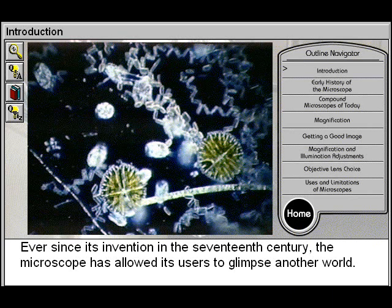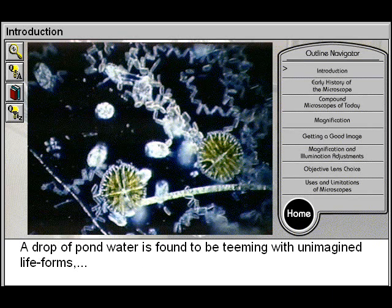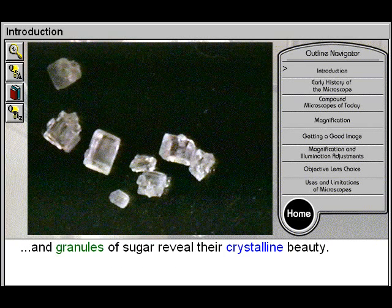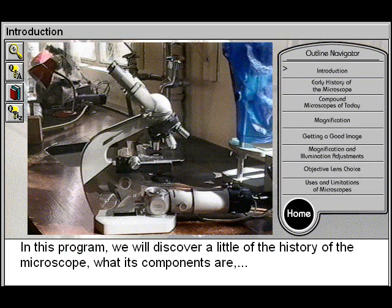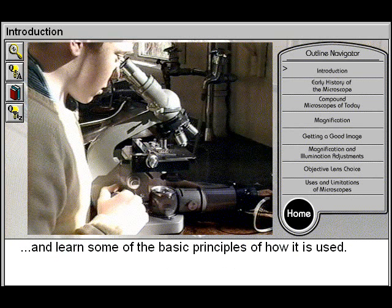Ever since its invention in the 17th century, the microscope has allowed its users to glimpse another world. A drop of pond water is found to be teeming with unimagined life forms, and granules of sugar reveal their crystalline beauty. In this program, we will discover a little of the history of the microscope, what its components are, and learn some of the basic principles of how it is used.